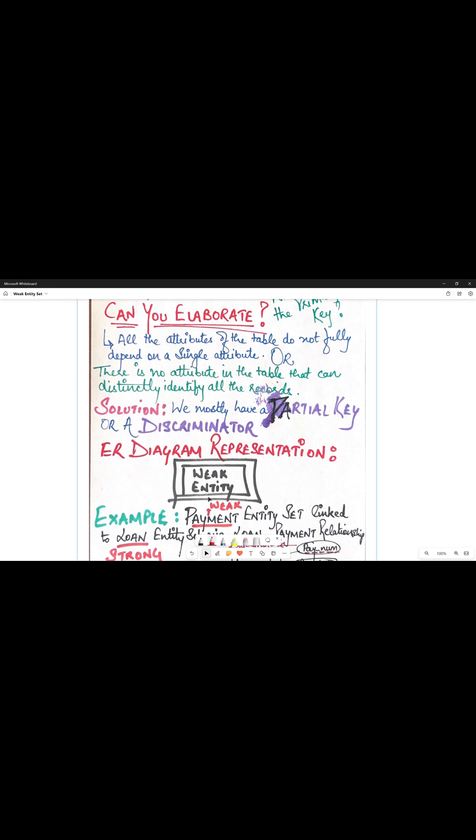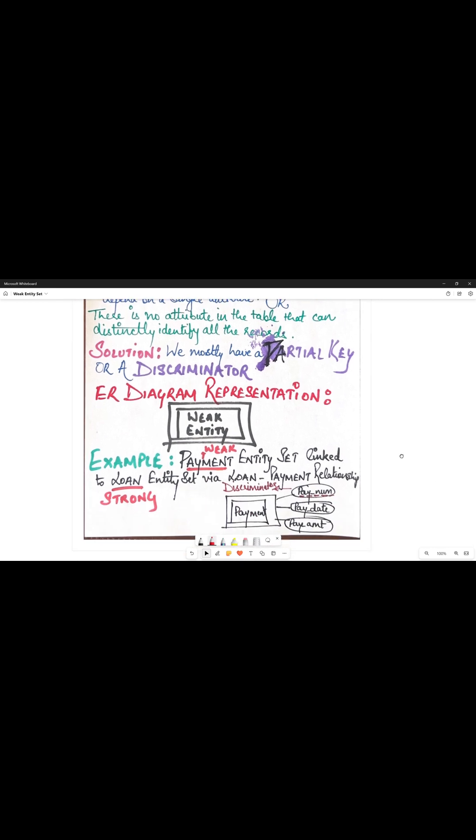What is the ER diagram representation? We represent it using double rectangles, as you can see over here. Let's come to an example. An example of a weak entity set is a payment entity set linked to a strong entity set, which is let's say a loan entity set, and we can link it via loan payment relationship.